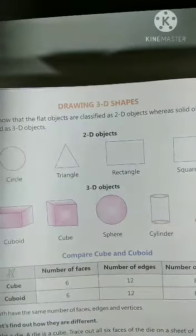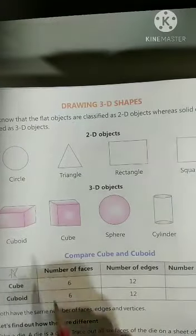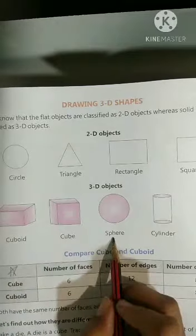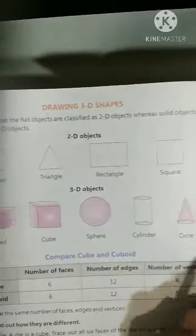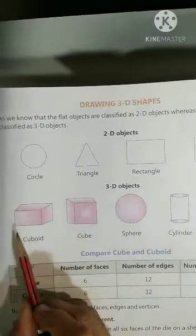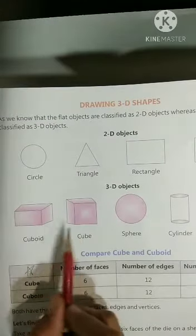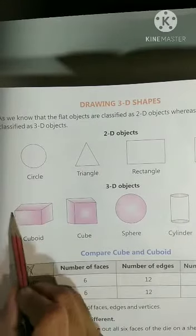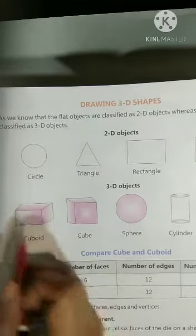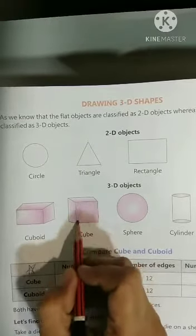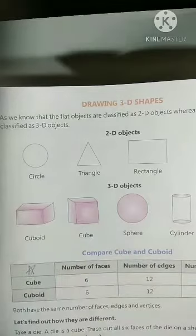Now, what are 3D objects? This you have seen - cuboid, cube, sphere, cylinder and the last one is cone. See children, what is the difference between cuboid and cube? Cuboid is made up of rectangle, here you can see the rectangle shape and cube is made of square shape.